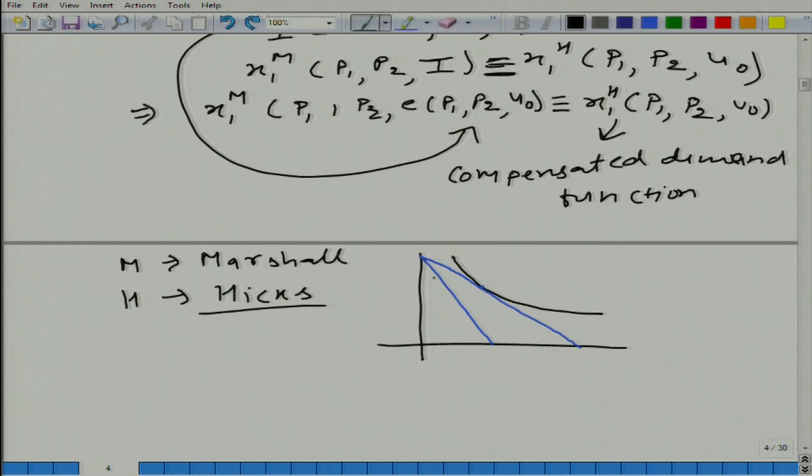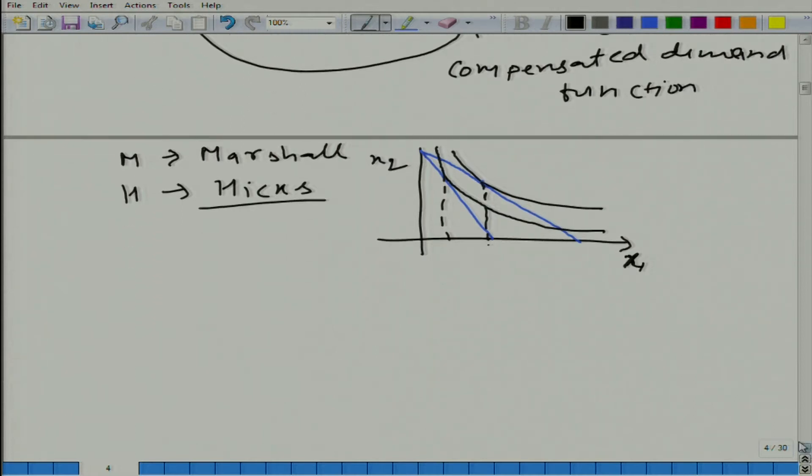Let us say this is the original optimal bundle and this is the new optimal bundle. This we have x1 amount of good 1 and here is this amount of good 2. When we translate this here, we will have x1 and p1 here. We will get a point here and we will get a point here, this point represents a higher price and this represents a lower price. So, if we keep on changing the price of good 1 and we keep on continuing this process, what we will get? We will get basically the demand function.